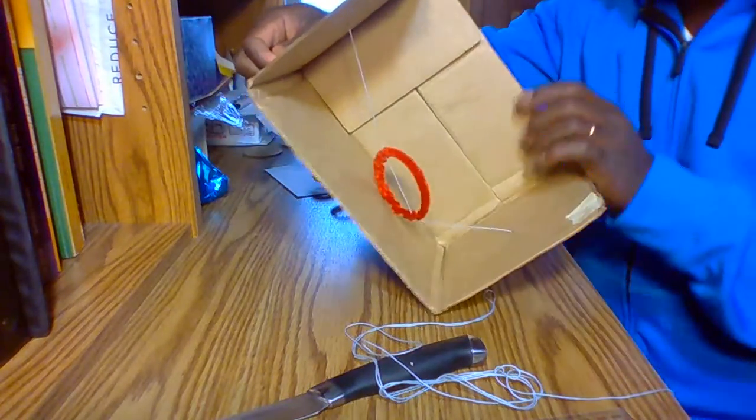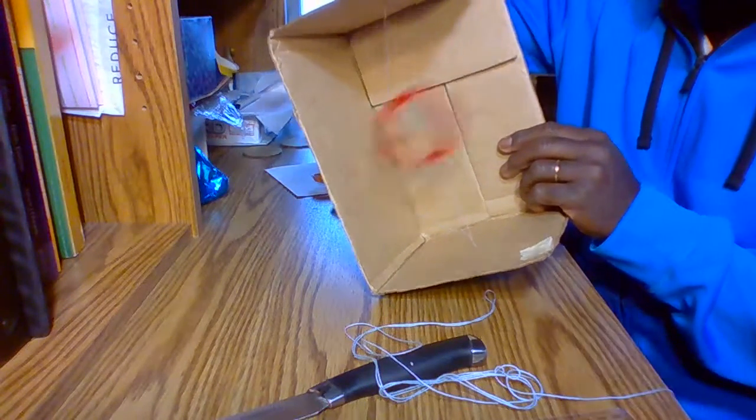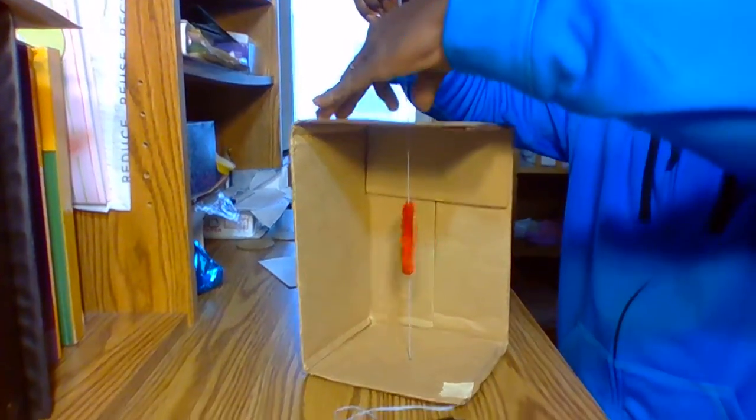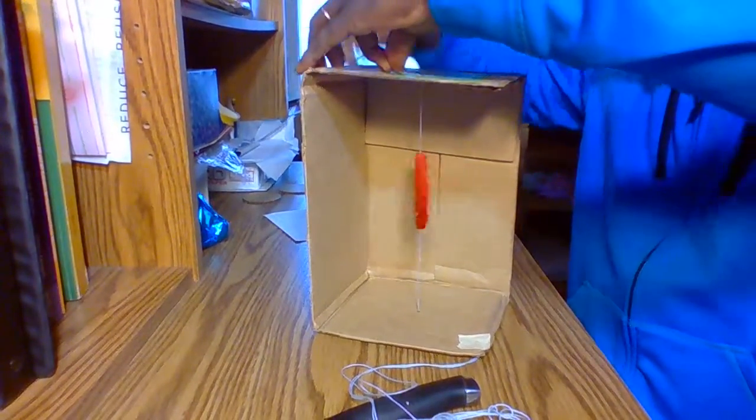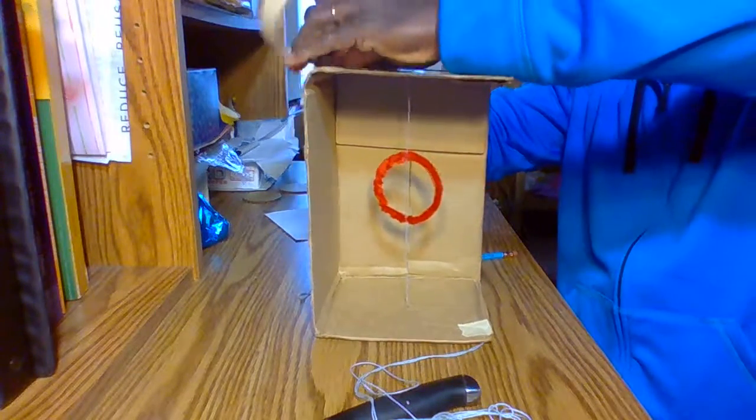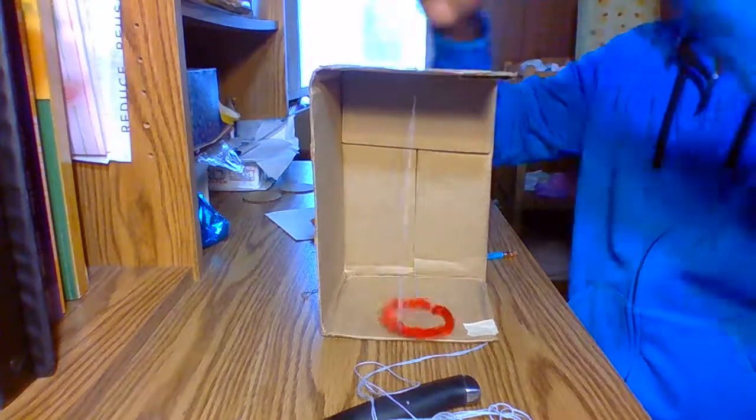So once I put the pipe cleaner and the string through the hole, we have our circle there. I'm going to strap the string to the box with the masking tape. I should have some tips. Pop it out, don't come out.